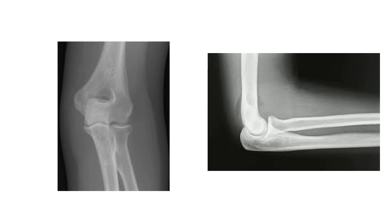By these three bones, this elbow joint is formed. So according to the number of articulating bones, this elbow joint is the compound variety of synovial joint. This is also a hinge variety of synovial joint. According to movement of axis, this elbow joint is a uniaxial joint.